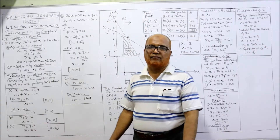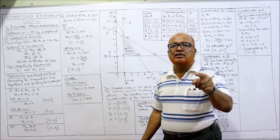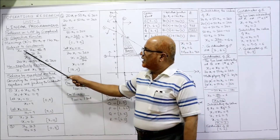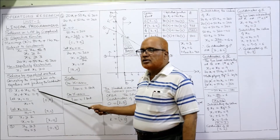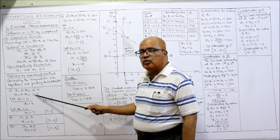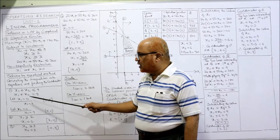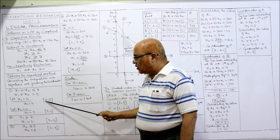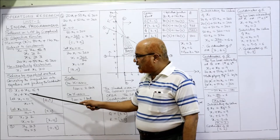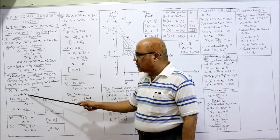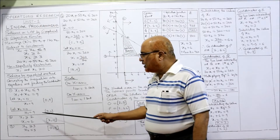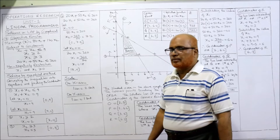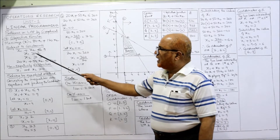Solving by graphical method, we convert the inequalities into equations as usual and find the coordinates. First: x1 + x2 ≤ 9, making it equal to 9. Let x1 = 0, so x2 = 9 — coordinates (0, 9). When x2 = 0, x1 = 9 — coordinates (9, 0). So we got the coordinates of the first equation.